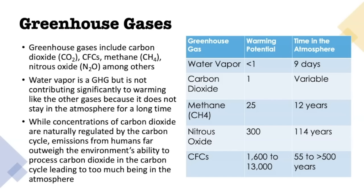Notice that water vapor's warming potential is very low. Carbon dioxide is kind of the base that we measure all other greenhouse gases against, so its warming potential is one. Methane is significantly stronger than carbon dioxide, and then nitrous oxide and CFCs are much stronger than that. Carbon dioxide actually retains a lot of heat as well just because there is so much of it. The time in the atmosphere also affects how these gases affect warming over time. Water vapor's time in the atmosphere is relatively low partly because water cycles through the hydrologic cycle, going through precipitation and evaporation, so it doesn't contribute quite as much to warming as the other gases do.